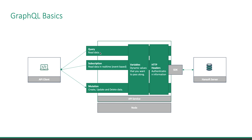First, you can query data — that means reading data, for example reading projects. Second, you can subscribe to different events, such as project updates, which is useful if you're building a real-time application. Third, when you want to modify anything, it's called a mutation in GraphQL — that covers create, update, or delete. With these requests, you send in variables with dynamic values and HTTP headers for authentication, so HandSoft knows who you are.